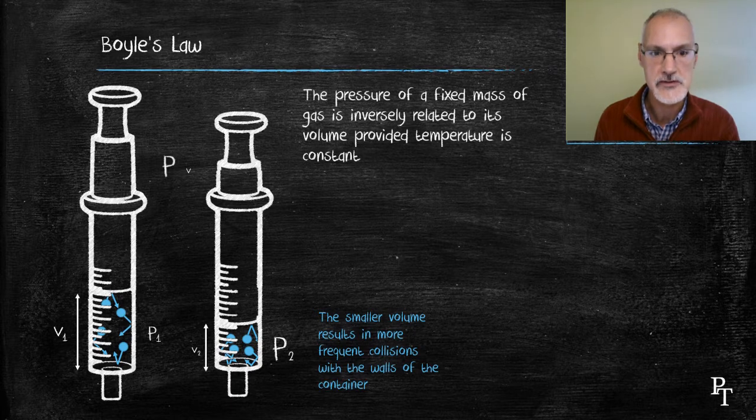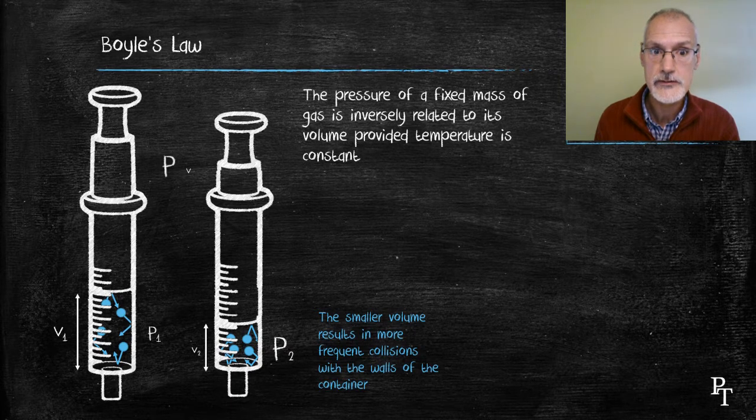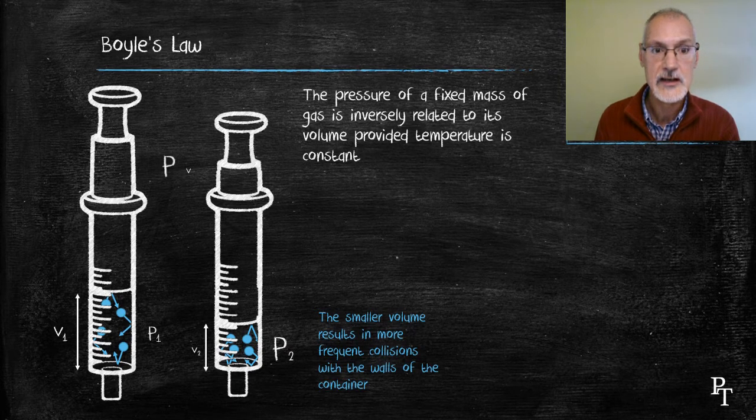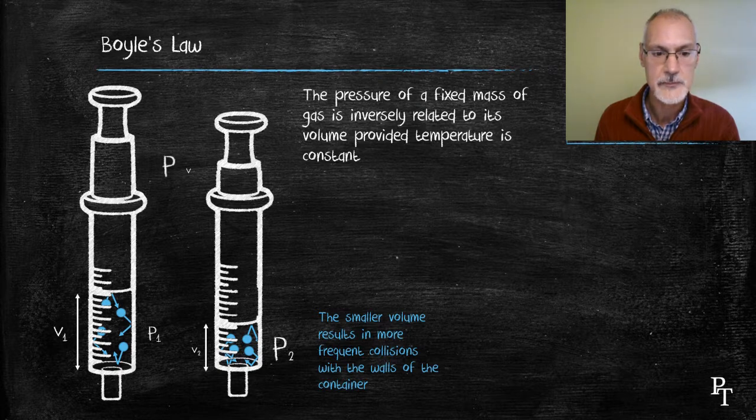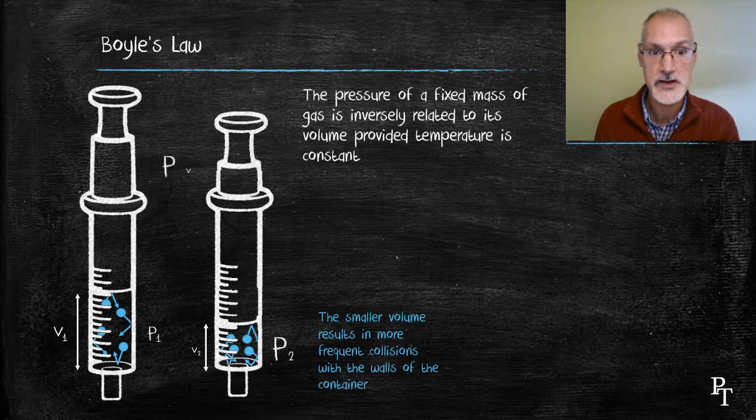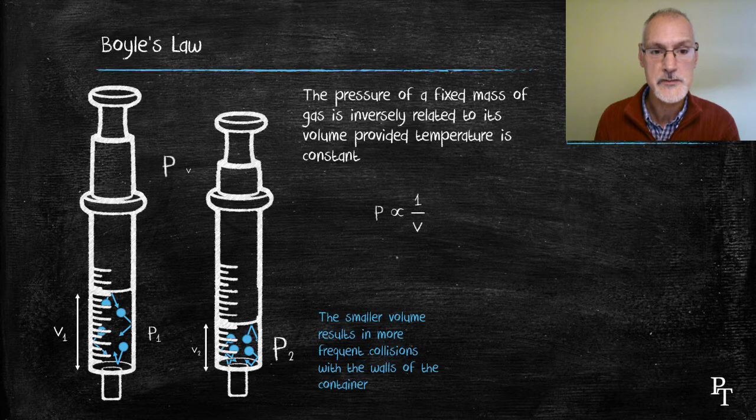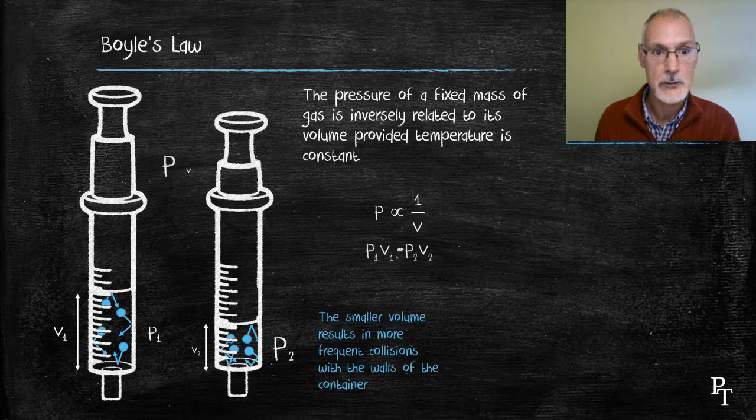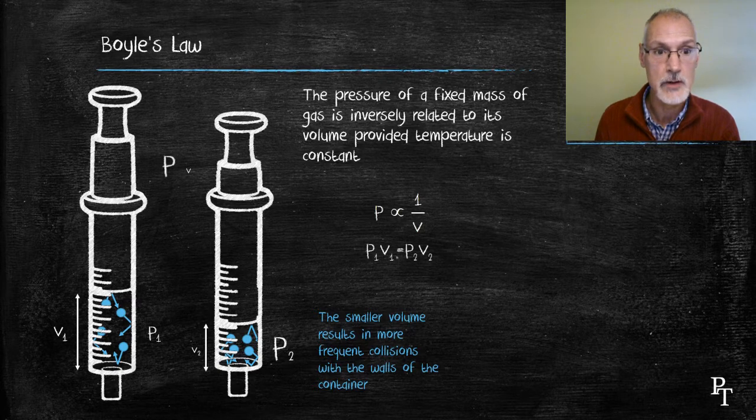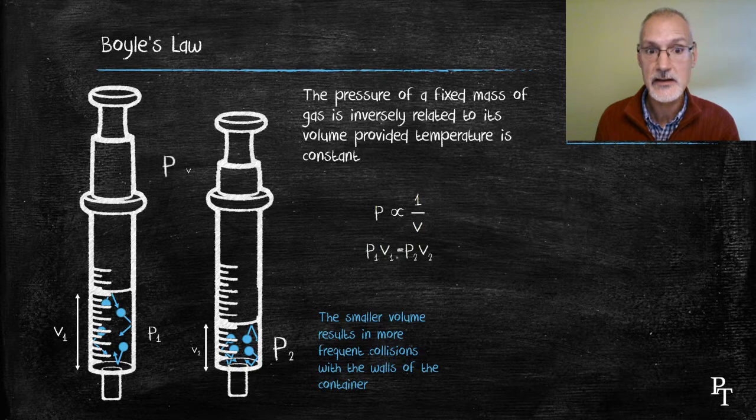As one goes up, the other goes down. Again, this only holds true for a fixed mass of gas at a constant temperature. We can express it using this proportionality sign, that the pressure is proportional to 1 over the volume. Mathematically, we can express it this way, where we take our initial pressure and volume and multiply them, and that will equal the product of our second condition's pressure and volume.